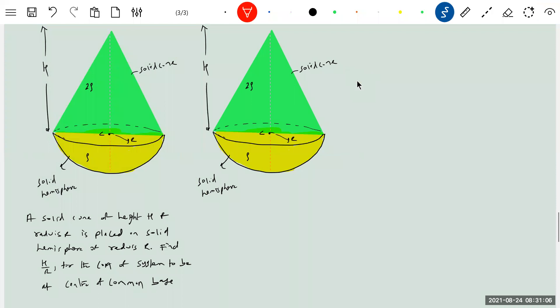We should now get into the calculations. Where is the center of mass of solid cone? H by 4, we know it. That of the hemisphere, 3R by 8.